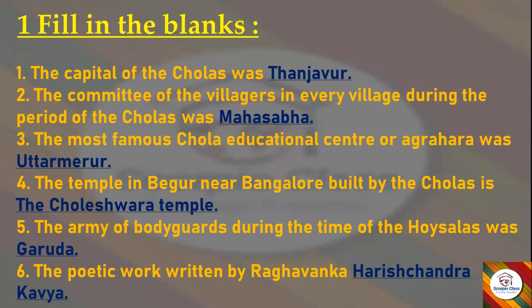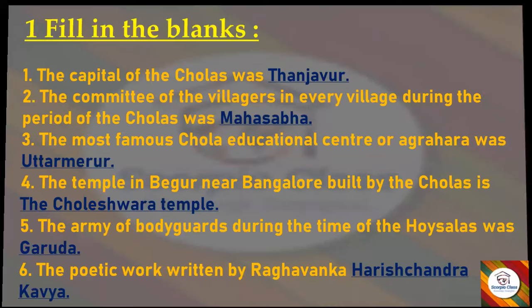Next: the temple in Begur near Bangalore built by the Cholas is — answer is the Choleshwara Temple. Next: the army of bodyguards during the time of the Hoysalas was — answer is Garuda. Next: the poetic work written by Raghavanka is — answer is Harishchandra Kavya. With that, we have finished fill in the blanks.